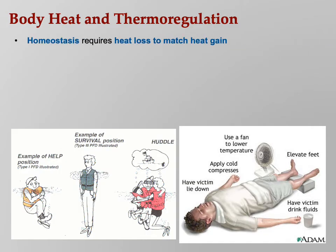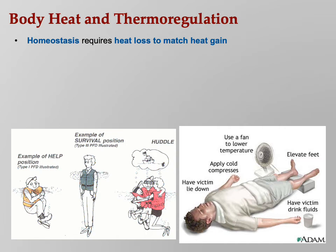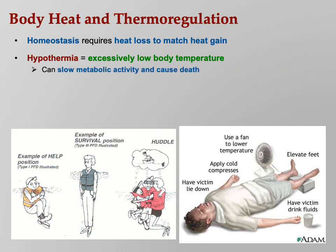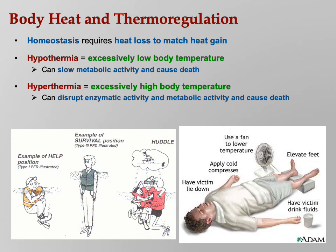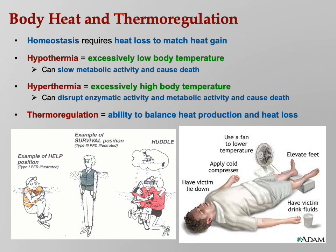Body heat and thermoregulation: for homeostasis, your heat loss has to match your heat gain — you've got to maintain a constant body temperature. Hypothermia and hyperthermia are both potentially life-threatening. Hypothermia means body temperature goes too low, which can slow metabolic activity and cause death. Hyperthermia means excessively high body temperature — also quite dangerous, as it can denature proteins including enzymes. Thermoregulation is where you balance those two.